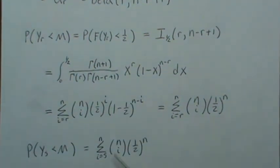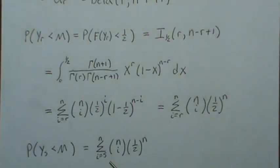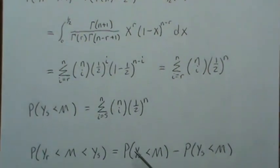So now, the same thing can be said for the probability that Y_S is less than M. It can be written as the sum of binomials from S to N, not R to N.